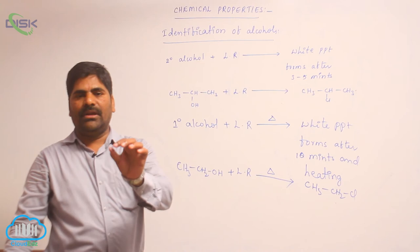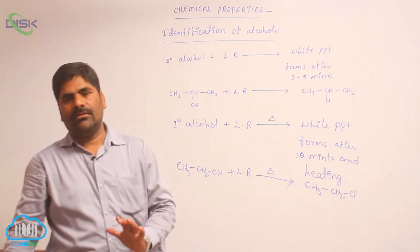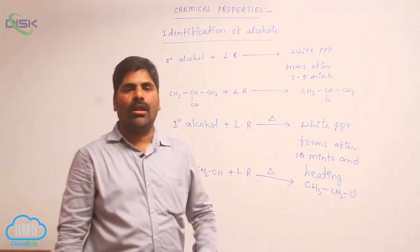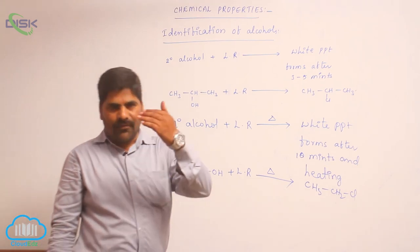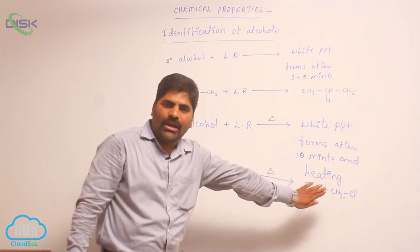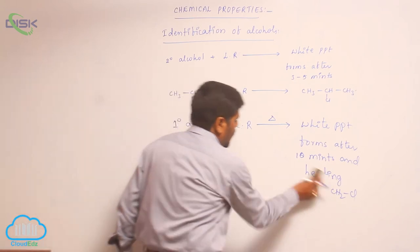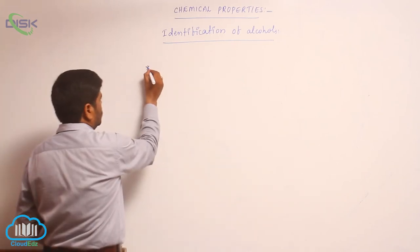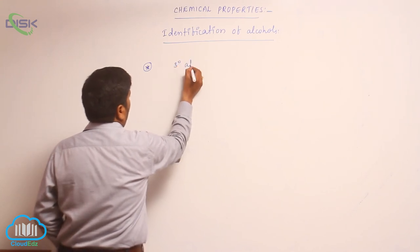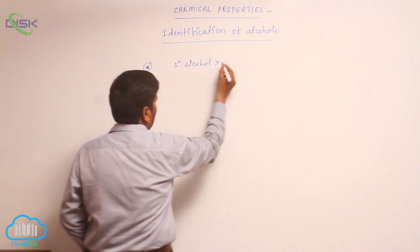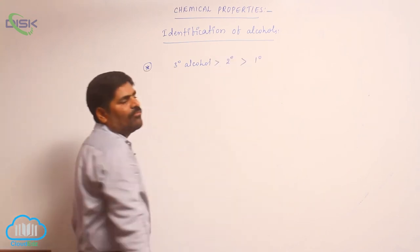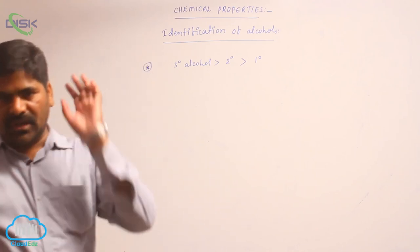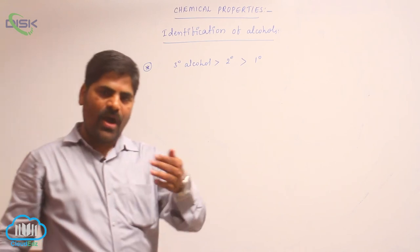In summary: when a mixture of alcohols reacts with Lucas reagent, if white ppt forms immediately or below 2 minutes it is a tertiary alcohol; if white ppt forms after 3 to 5 minutes it is a secondary alcohol; if white ppt forms after 10 minutes with heating it is a primary alcohol. Therefore, the order of reactivity with Lucas reagent is: tertiary > secondary > primary alcohol.